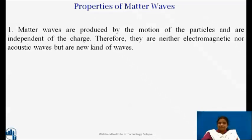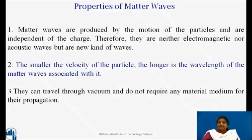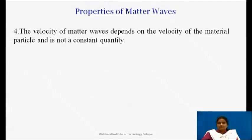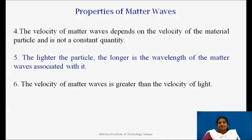So, the properties of matter waves can be: matter waves are produced by the motion of the particles and are independent of the charge. Therefore, they are neither electromagnetic nor acoustic waves, but they are a new kind of waves. The smaller the velocity of the particle, the longer is the wavelength of matter waves that is associated with it. They can travel through vacuum and they do not require any material medium for their propagation. The velocity of matter waves depends on the velocity of the material particle and is not a constant quantity. The lighter the particle, the longer is the wavelength of the matter waves associated with it. The velocity of matter waves is greater than the velocity of light. And lastly, they exhibit diffraction phenomena as any other waves.